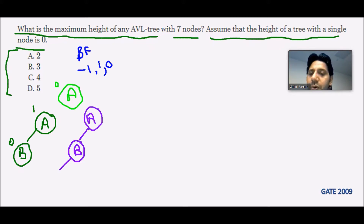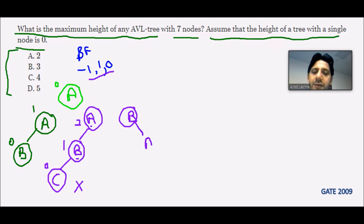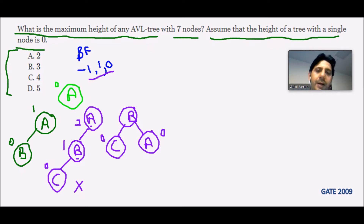With node C inserted: C has balancing factor zero, B has one minus zero which is one, and A has two minus zero which is two. This tree is not balanced because A's balancing factor is two. So we have to reconstruct: B becomes the root, A goes to the right, and C goes to the left. Now checking the balancing factor: leaves have zero, and the root B has one minus one which is zero — the tree is perfectly balanced.